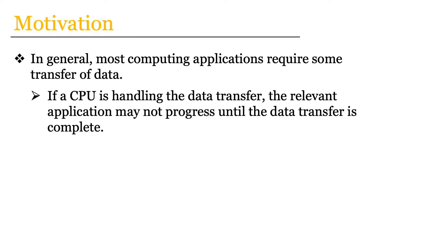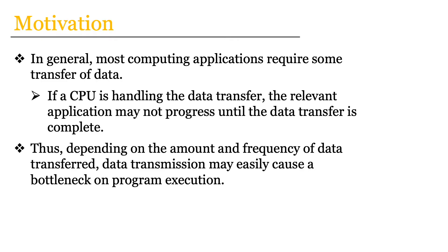Now there may be interrupts or events configured that cause the processor to be interrupted and have something else occur in the application, but the main thing we're trying to establish is that most of the time applications have this contingency on some amount of data transfer. Generally we have a condition or a point in our program where we need to wait until either data is received or transmitted before we know what to do next. With this understanding, we need to further recognize that depending on the amount and frequency of data transferred, data transmission may easily cause a bottleneck on our program execution.